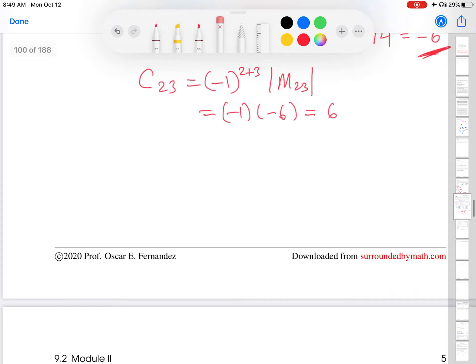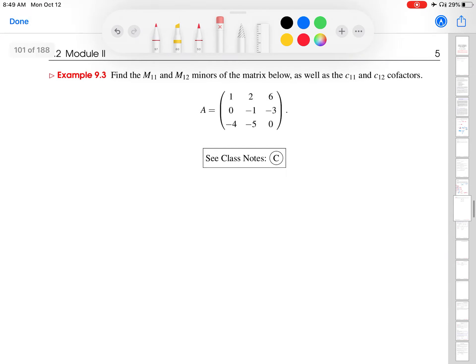All right, so I'm going to scroll down now that we've reviewed all of that and find these minors and cofactors for this matrix. So let's talk first about M11. So that's the matrix obtained by deleting the first row, first column from the matrix A. And I'm left with minus 1, minus 3, minus 5, 0. Great, so I'm going to just call this A.